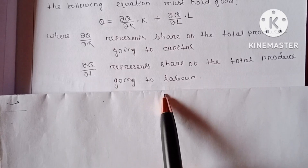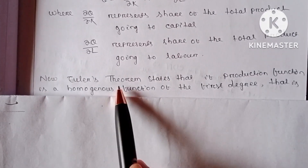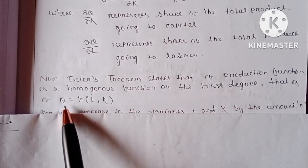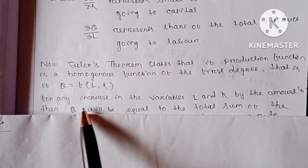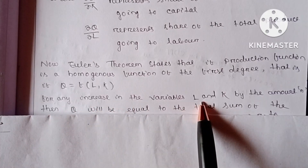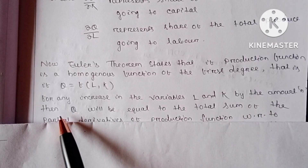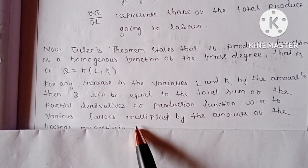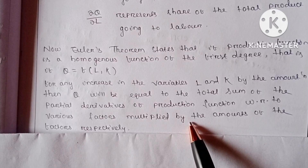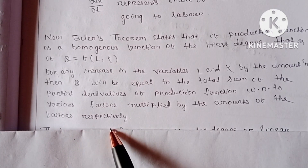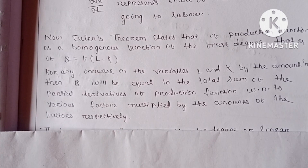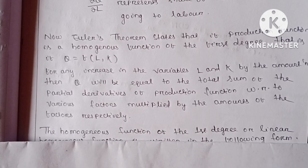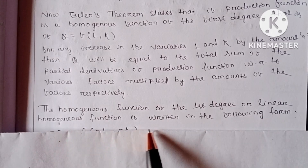Euler's theorem states that if the production function is a homogeneous function of the first degree — that is, Q equals a function of labor and capital — then for any proportional increase in variables labor and capital by amount N, Q will equal the sum of the partial derivatives of the production function with respect to various factors multiplied by the amounts of those factors respectively, that is MPK·K + MPL·L equals total output.